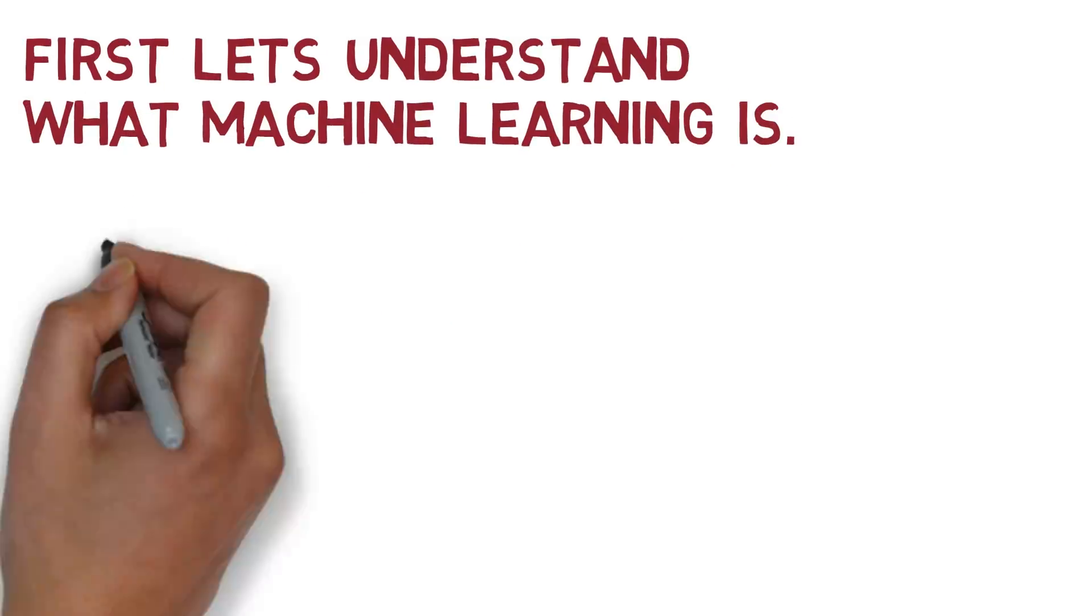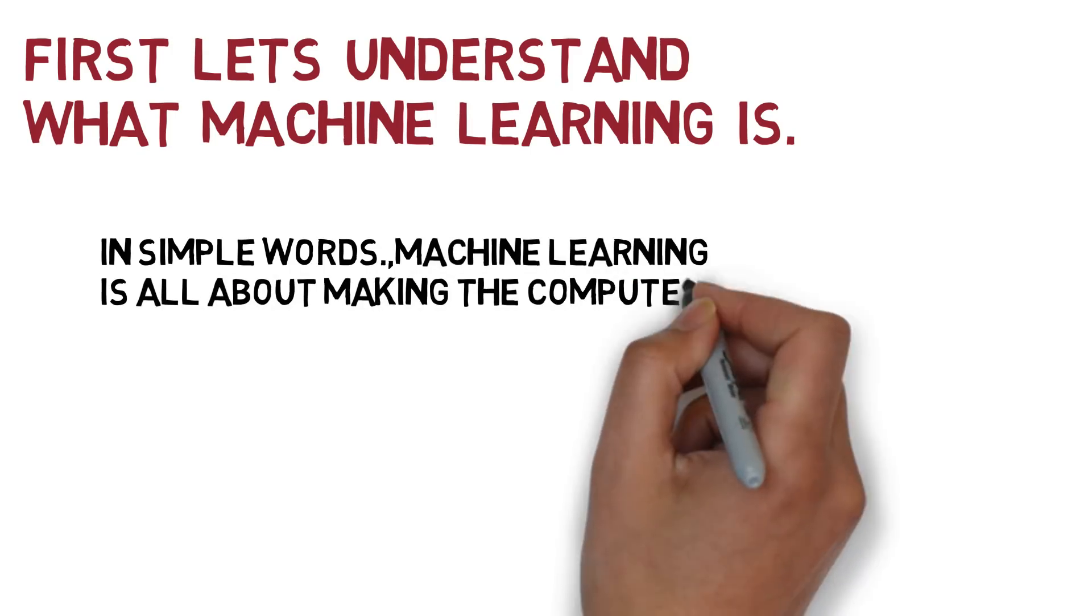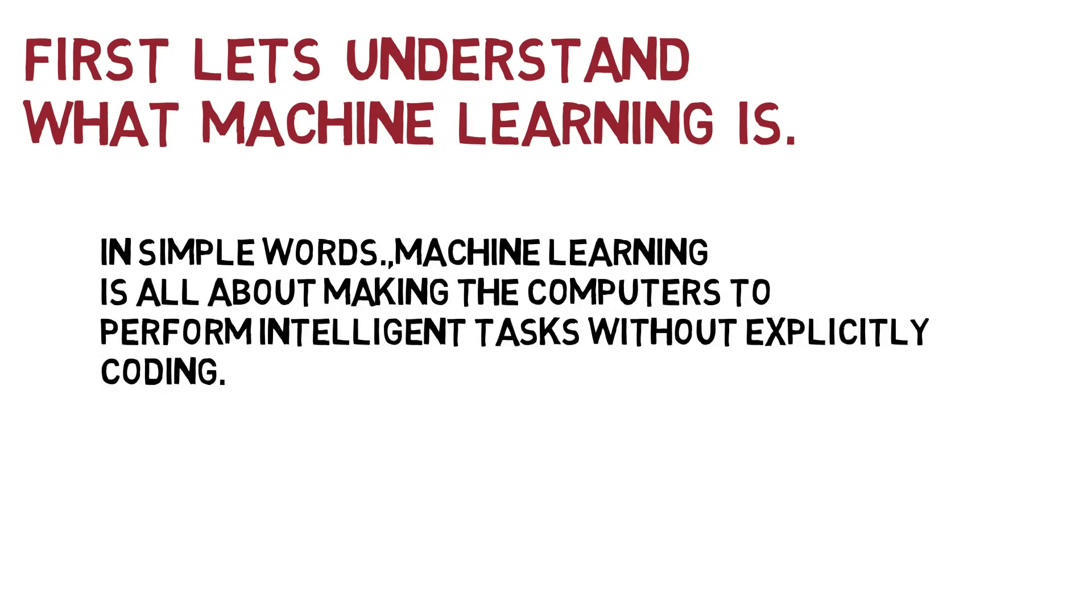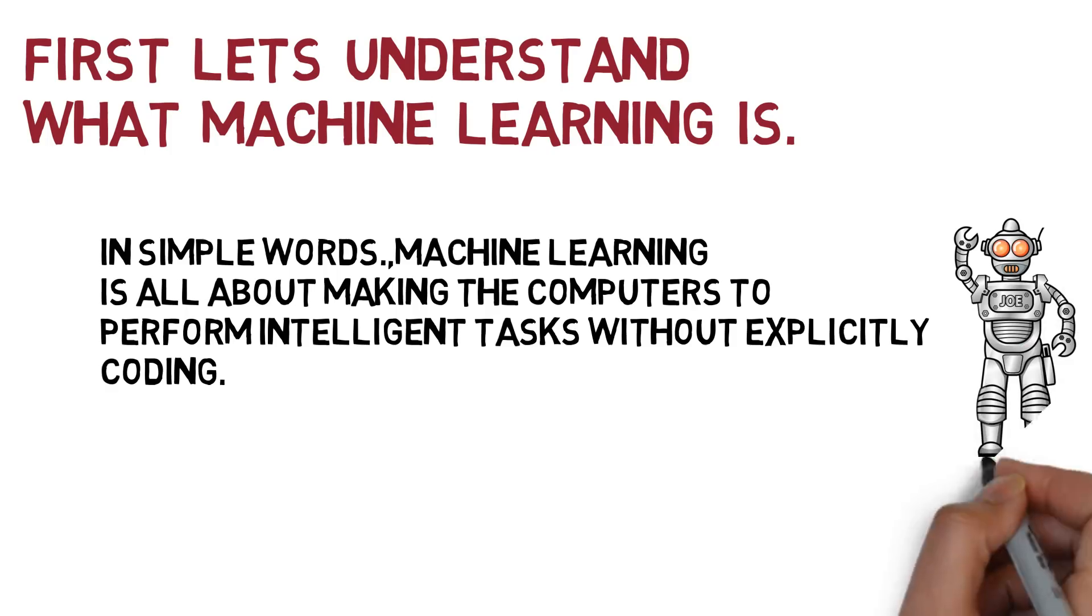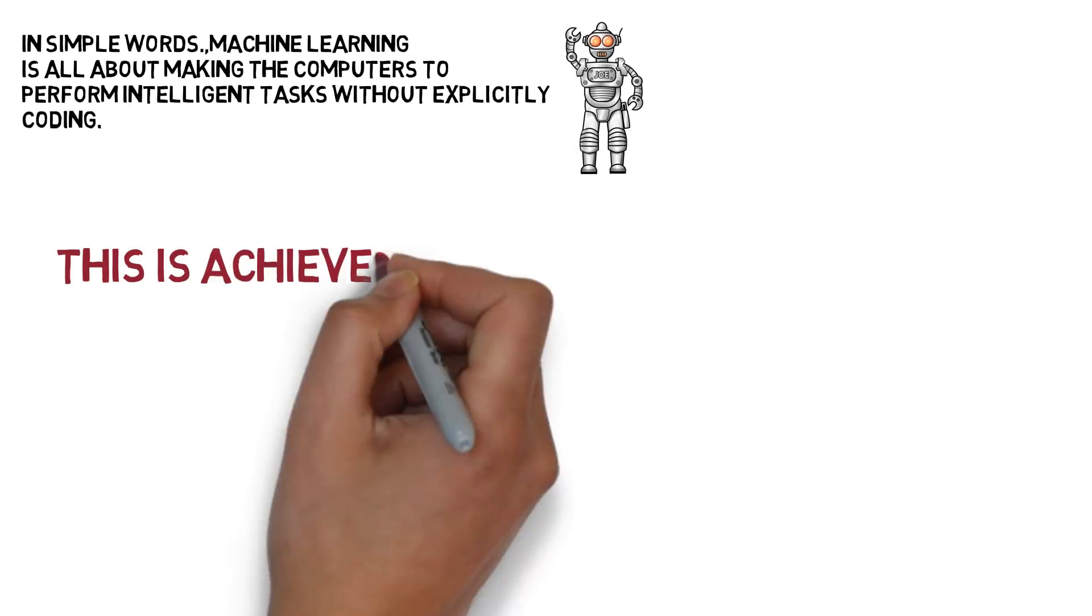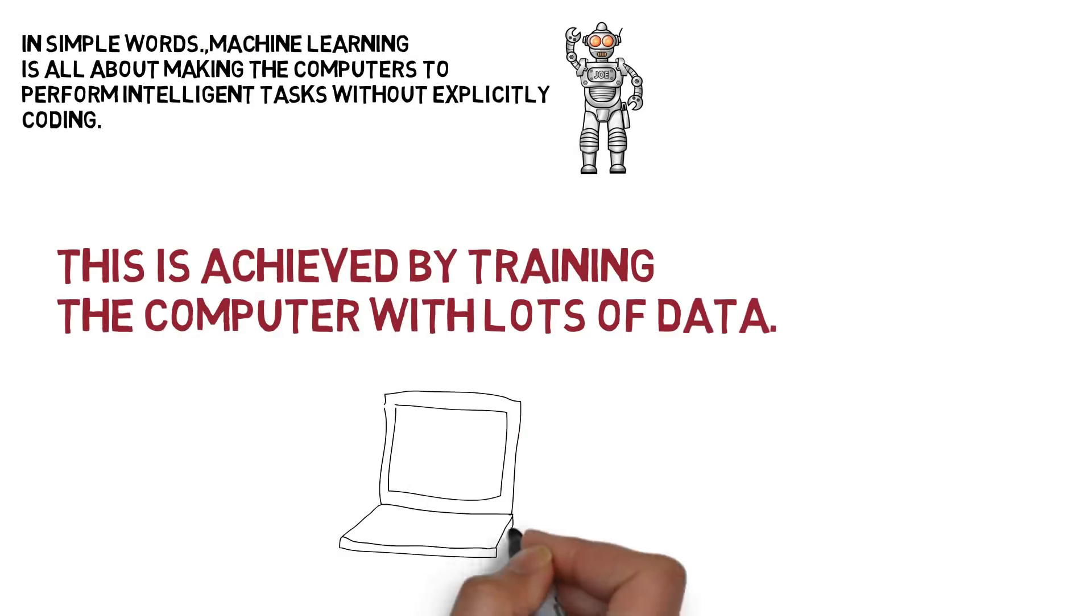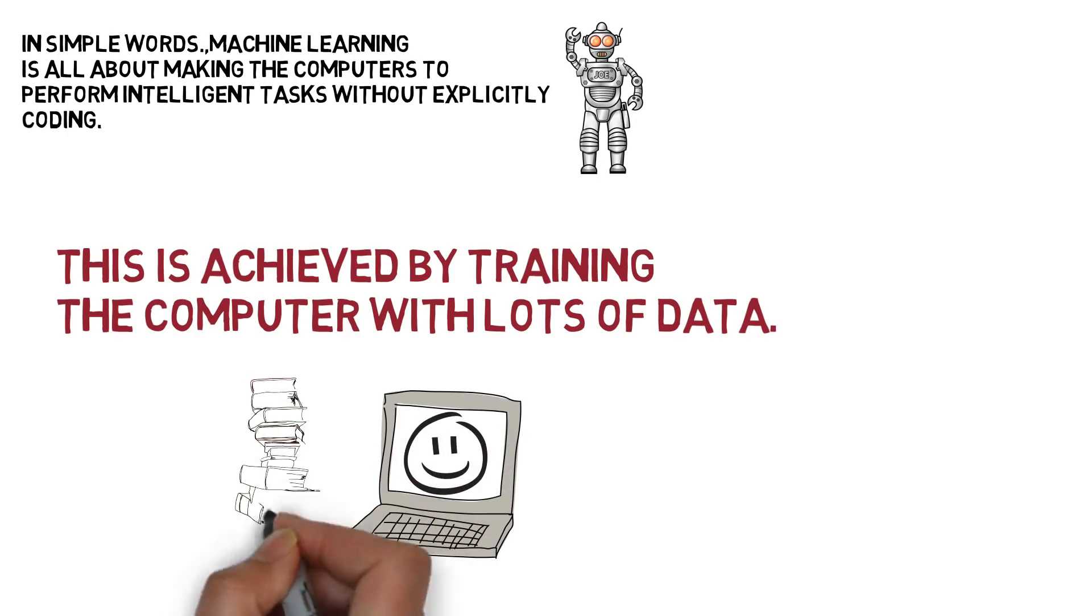In simple words, machine learning is all about making computers perform intelligent tasks without explicitly coding. This is achieved by training the computer with lots and lots of data.